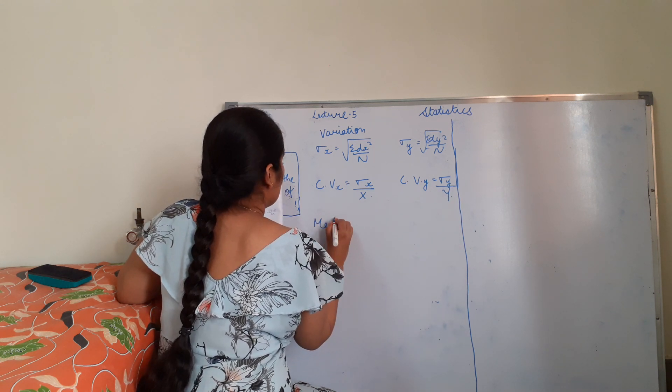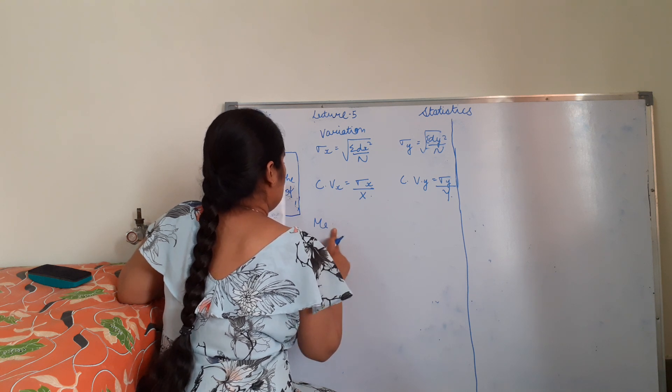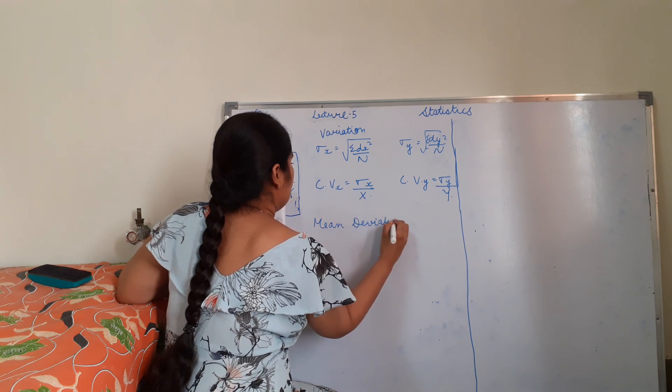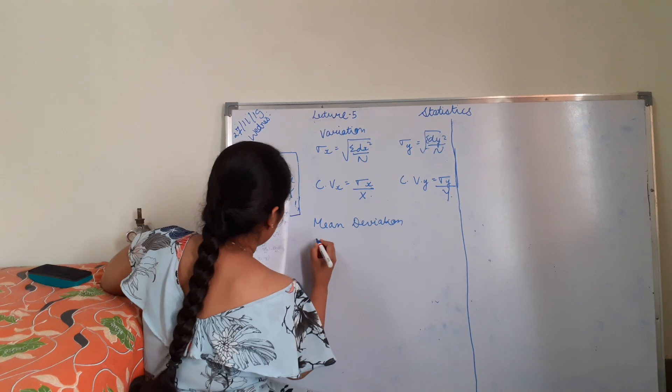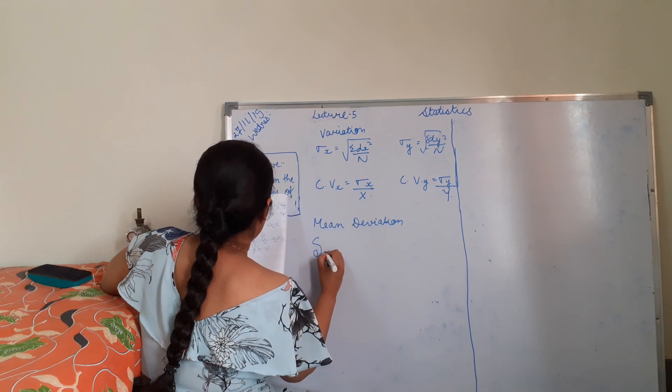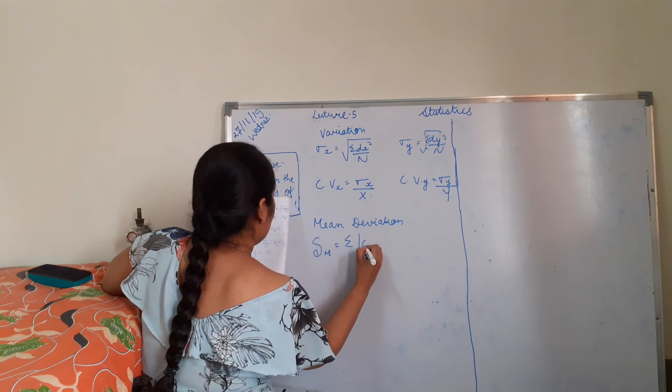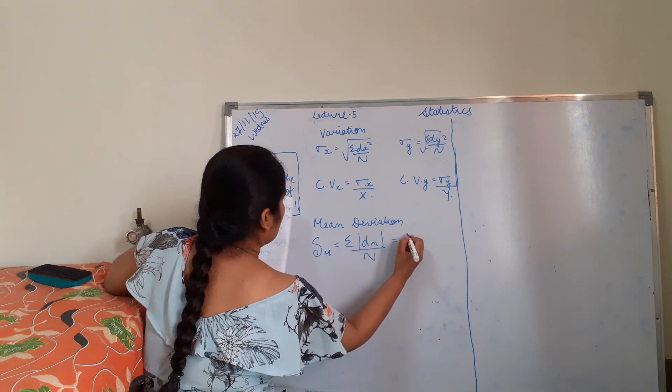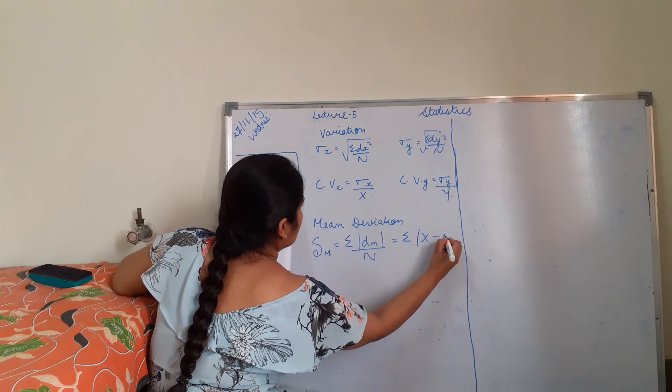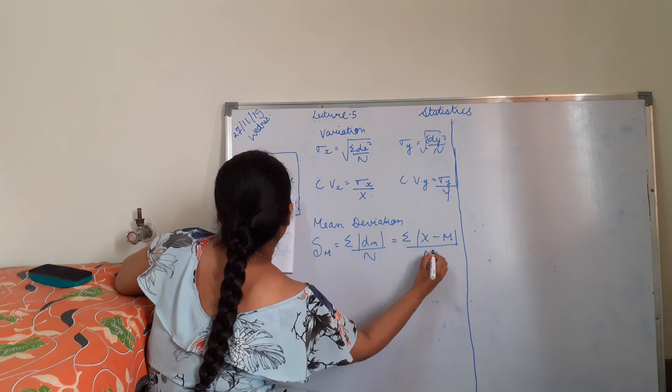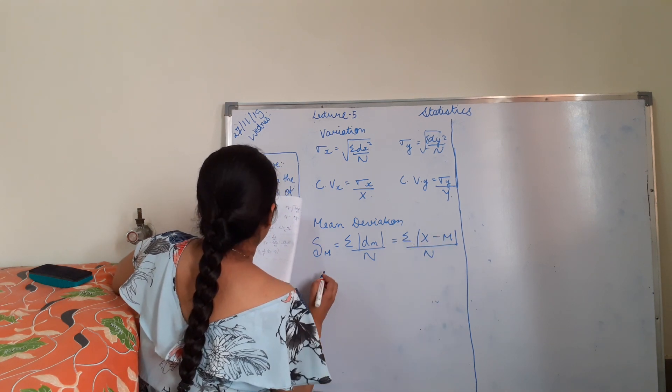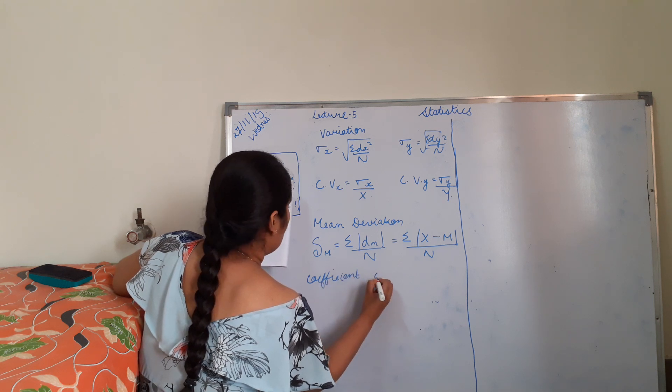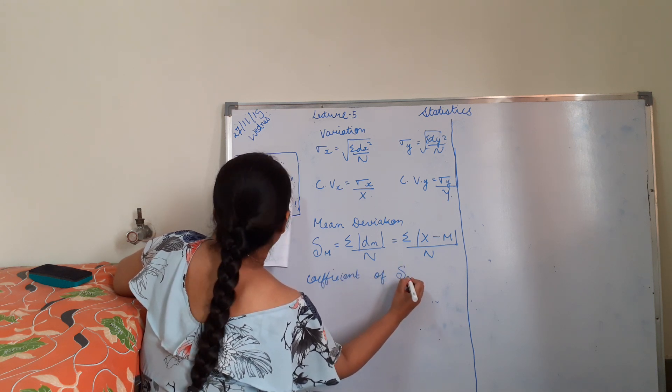What is mean deviation? It is denoted like this summation of dm by n which is equal to summation of x minus y by n. This is mean and coefficient of mean deviation.